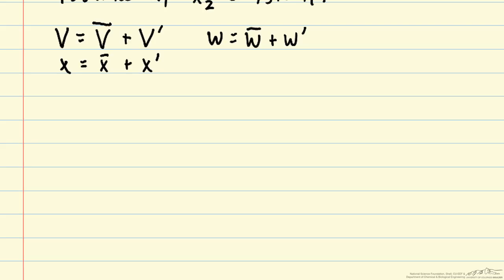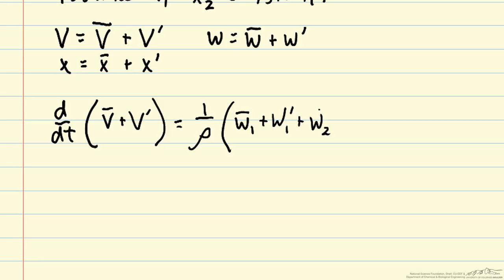Now we can plug into our original equations our deviation variables. Instead of v, we'll have v bar plus v prime. That's equal to 1 over rho times w1 bar plus w1 prime plus w2 bar plus w2 prime minus w bar minus w prime. And we can simplify this somewhat.